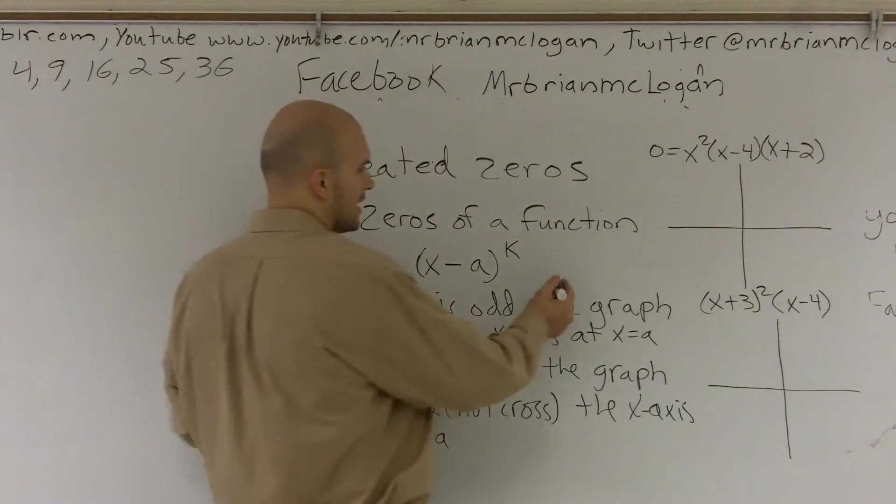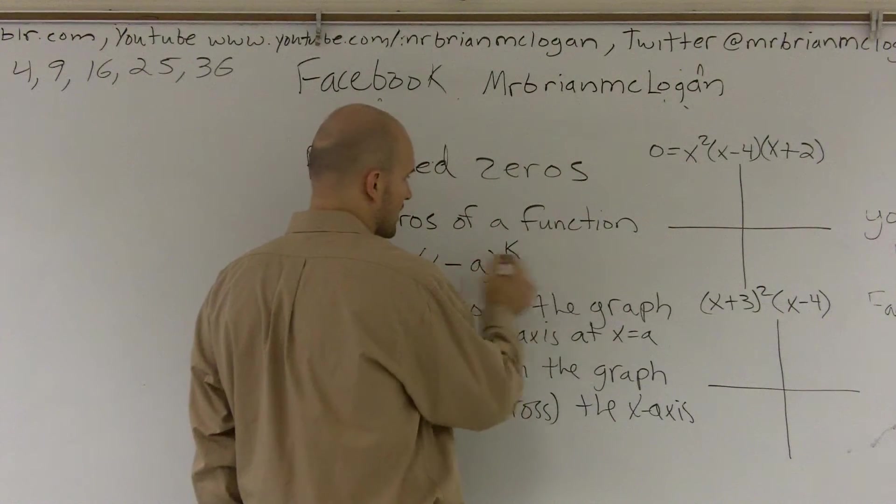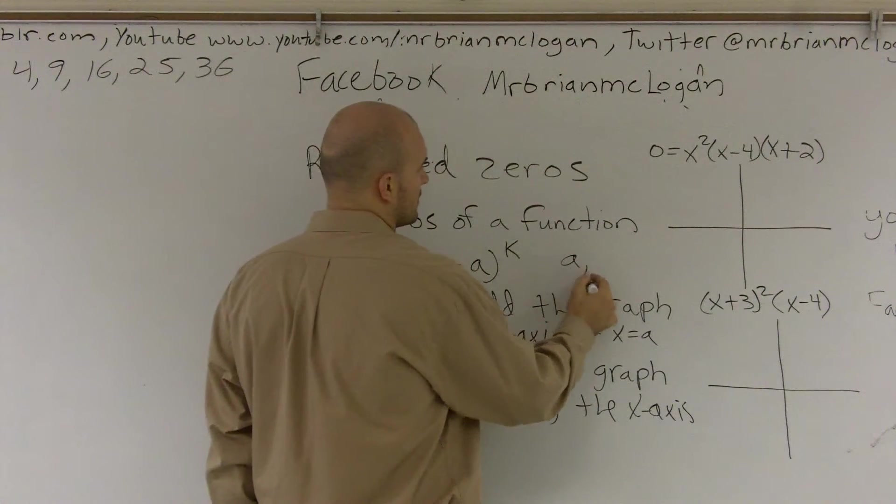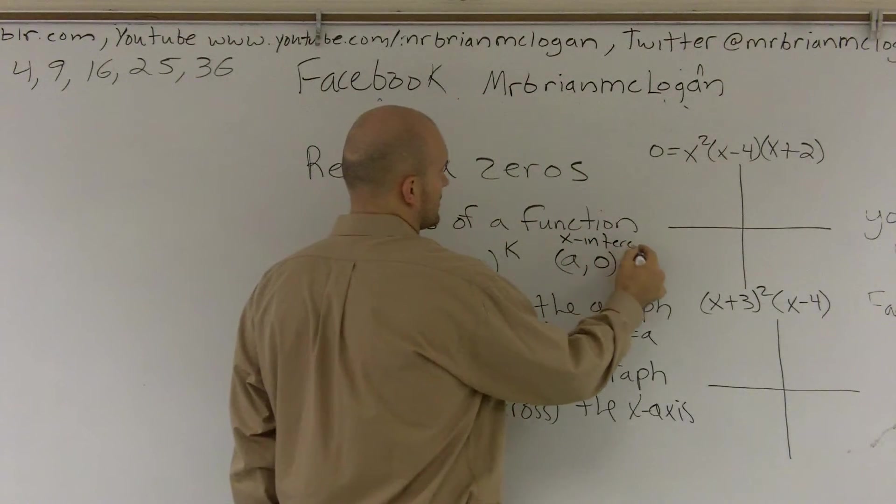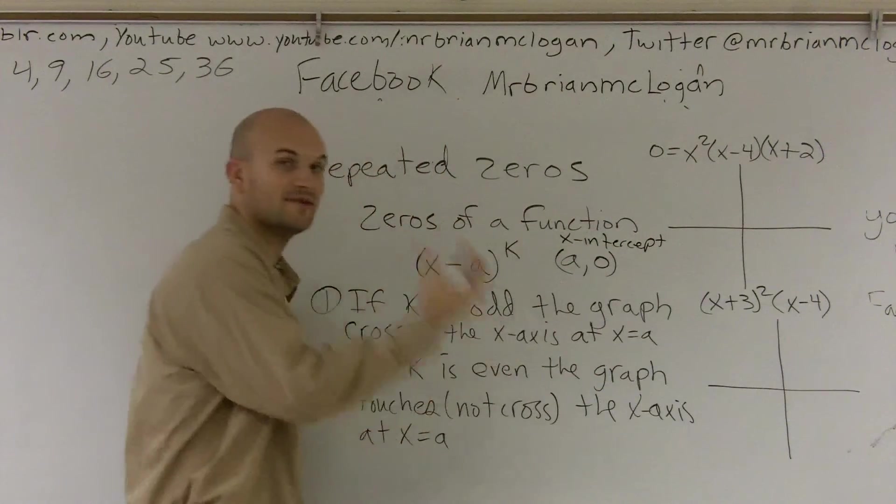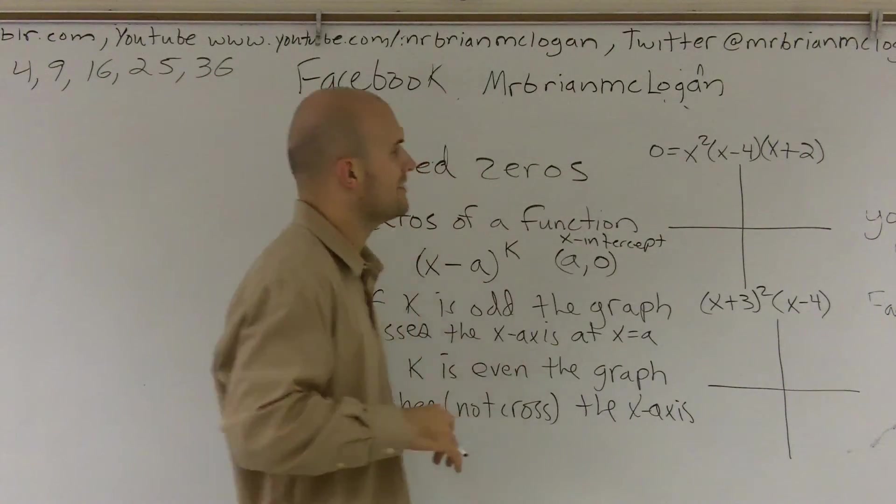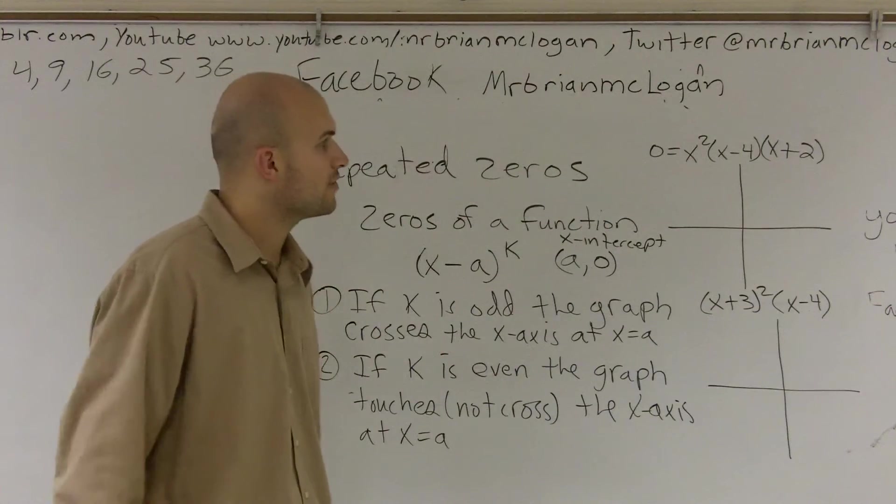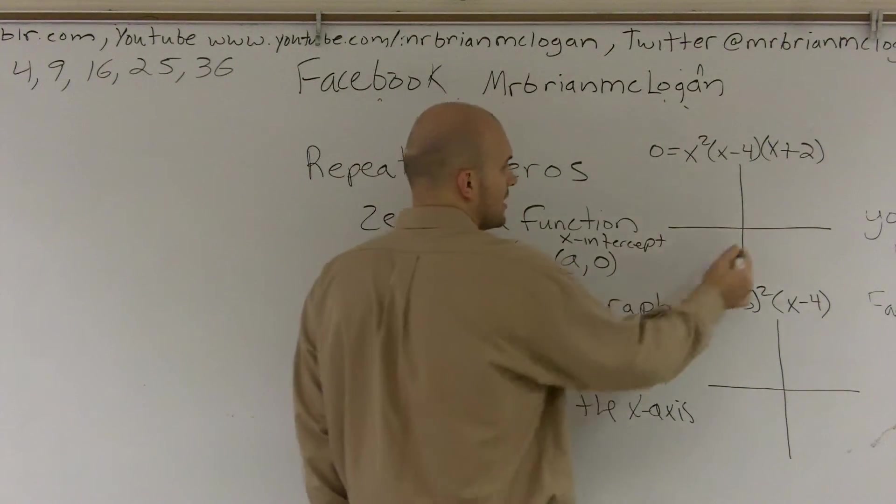Now remember, here's my zero. I know that it crosses at (a, 0). That's going to be your x-intercept, because that was one thing in the previous outline that I mentioned. So for here, I'm going to have x squared and then I have (x - 4) and (x + 2). So first, I'm going to match up all my x-intercepts.